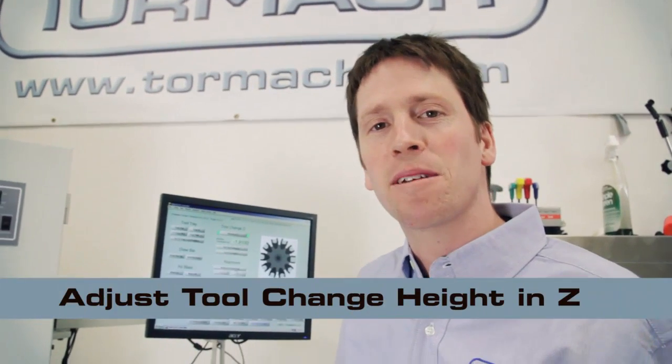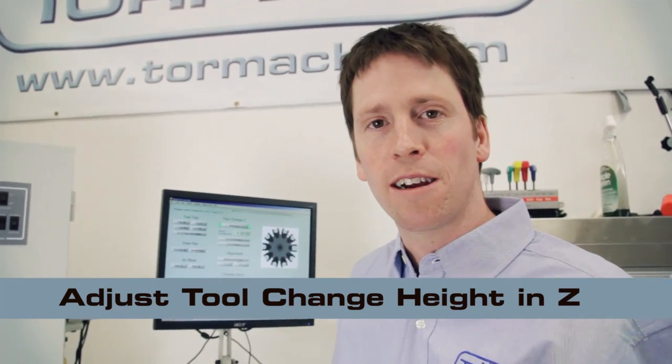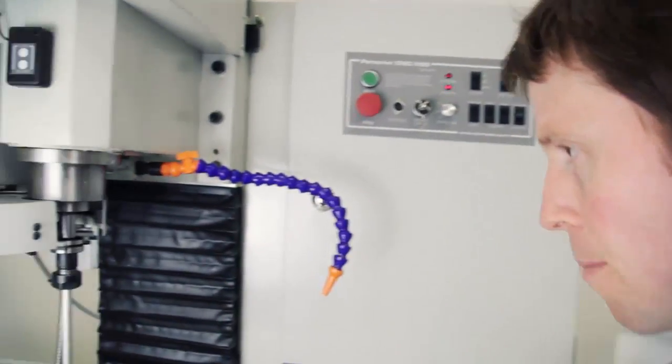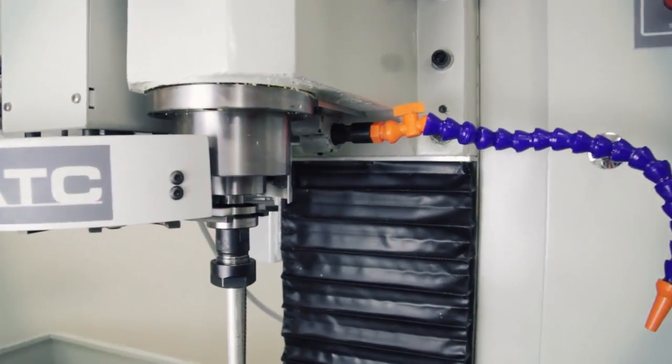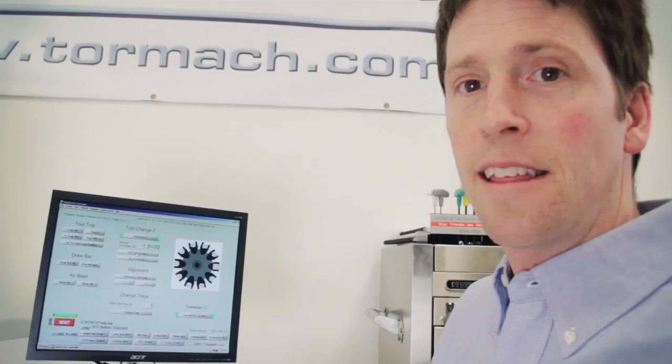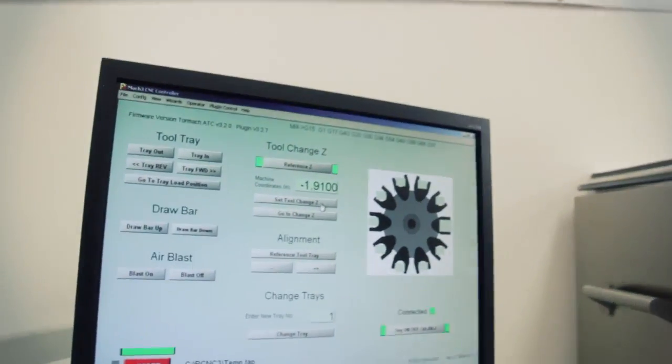The last step is setting the Z tool change height. So what I'm going to do is jog the Z axis down until the spindle nose just touches the TTS tool holder shoulder. Then on the ATC setup screen, set tool change Z.